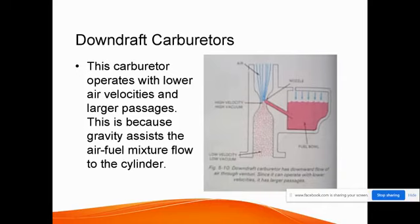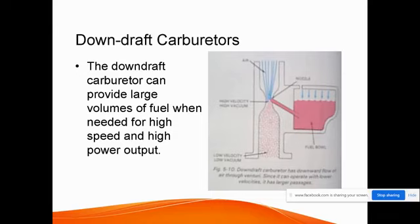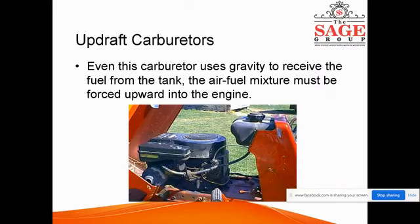The downdraft carburetor operates with lower air velocity and larger passages, because gravity assists the air-fuel mixture flow down to the engine. Downdraft carburetors can provide a large volume of fuel when needed for high speed and high power output. In lawnmowers, when a carburetor uses gravity to receive fuel from the tank, the air-fuel mixture must be forced upward into the engine.